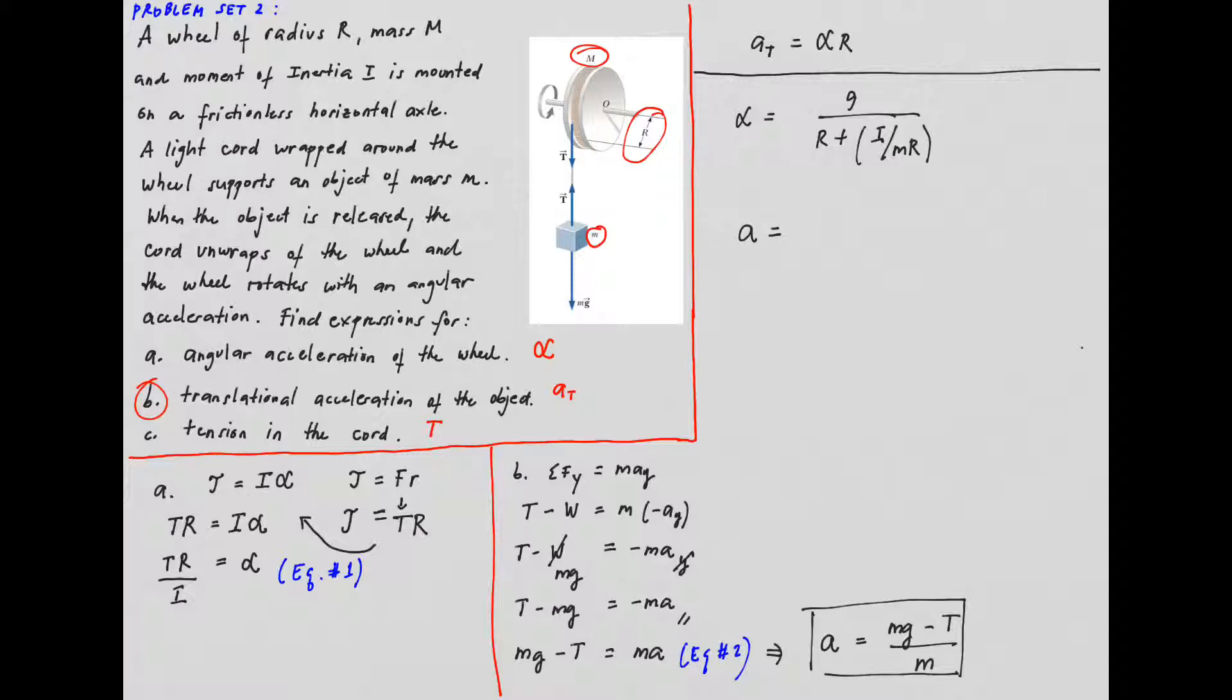which is g over 1 plus I over mr squared.